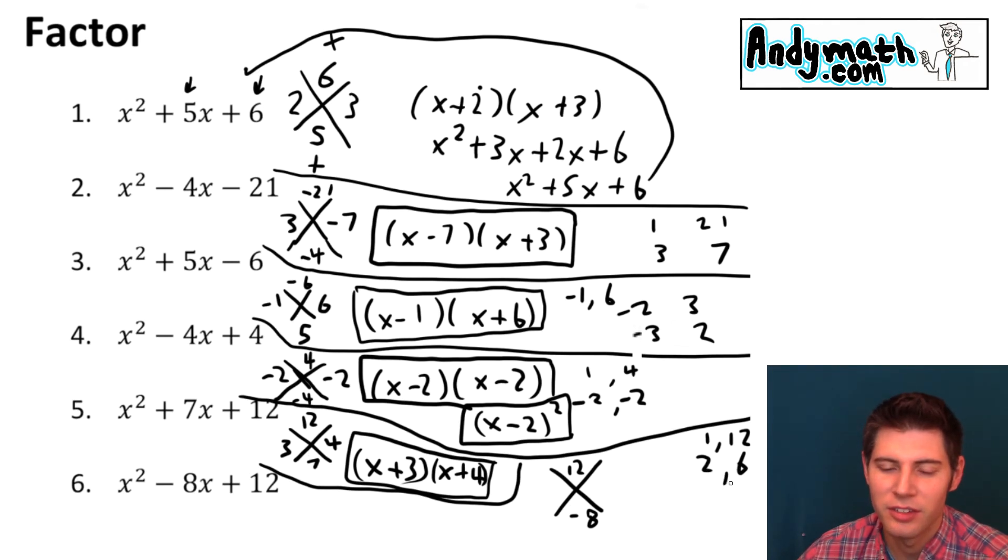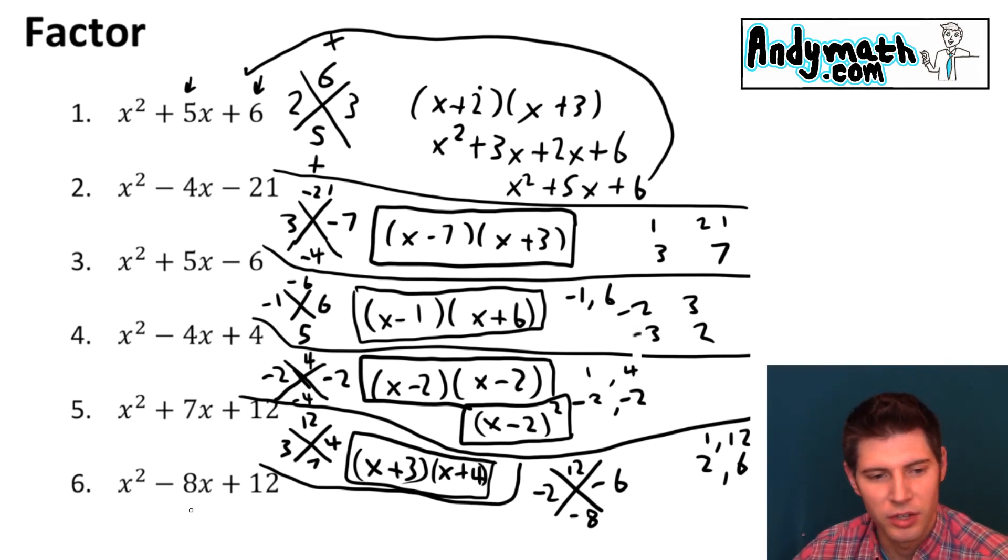2 and 6. 2 and 6. Yep, that works. And we want a negative 2 and a negative 6 because we want them to add to the negative 8. And then negative 2 times negative 6 is 12. So the answer for this one is x minus 2 and x minus 6. And that's it.